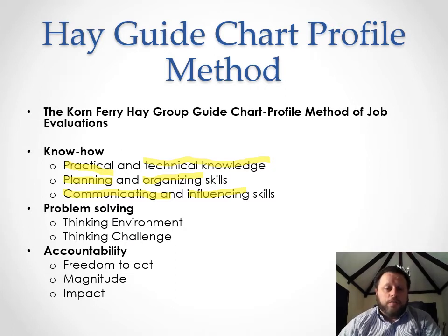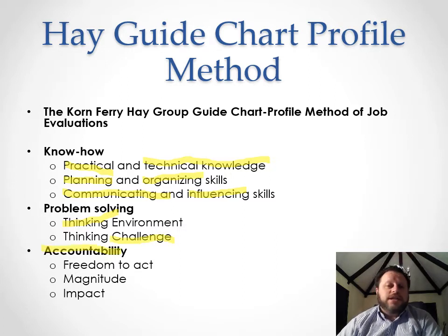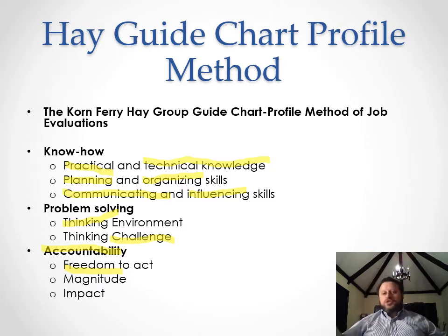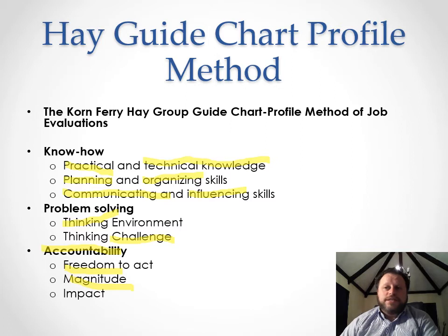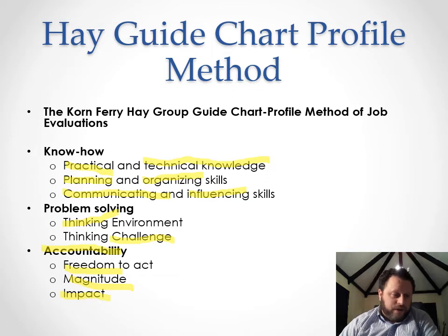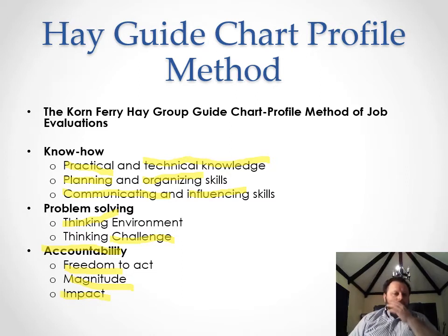This is the know-how category. We also have a problem-solving category — how much of a challenge is the thinking environment — and an accountability category. Does a salesperson have a lot of freedom? No — they must sell specific things in a specific place, while a marketing manager has more freedom. Magnitude also matters: a marketing campaign may cost a million dollars, while a salesperson sells iPhones at $700 each.